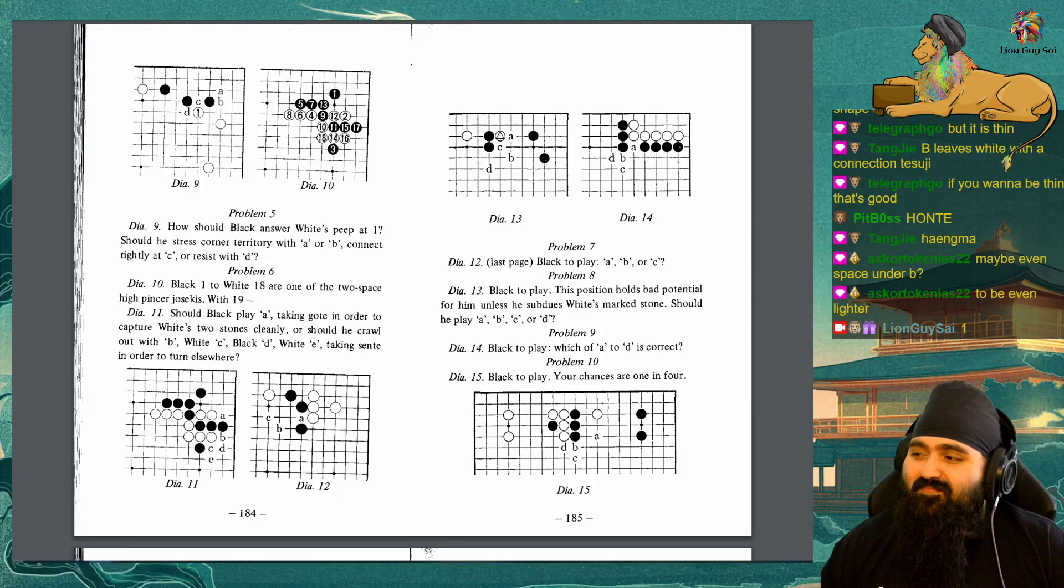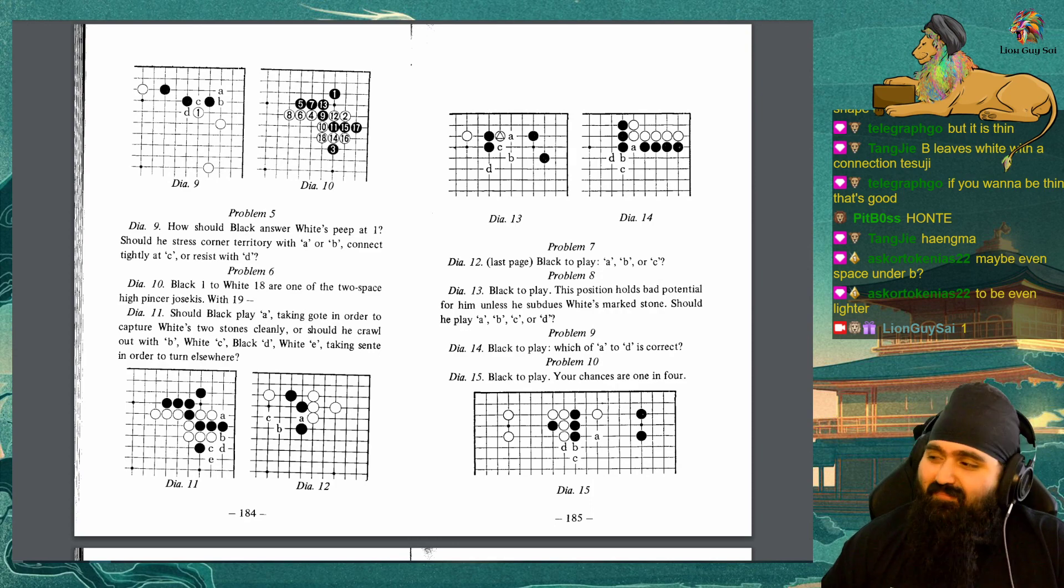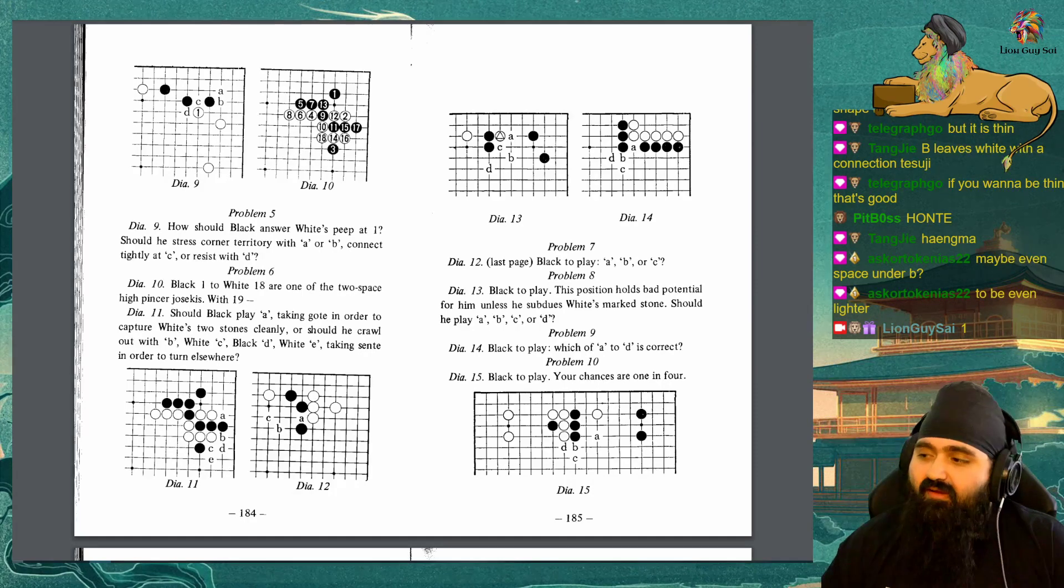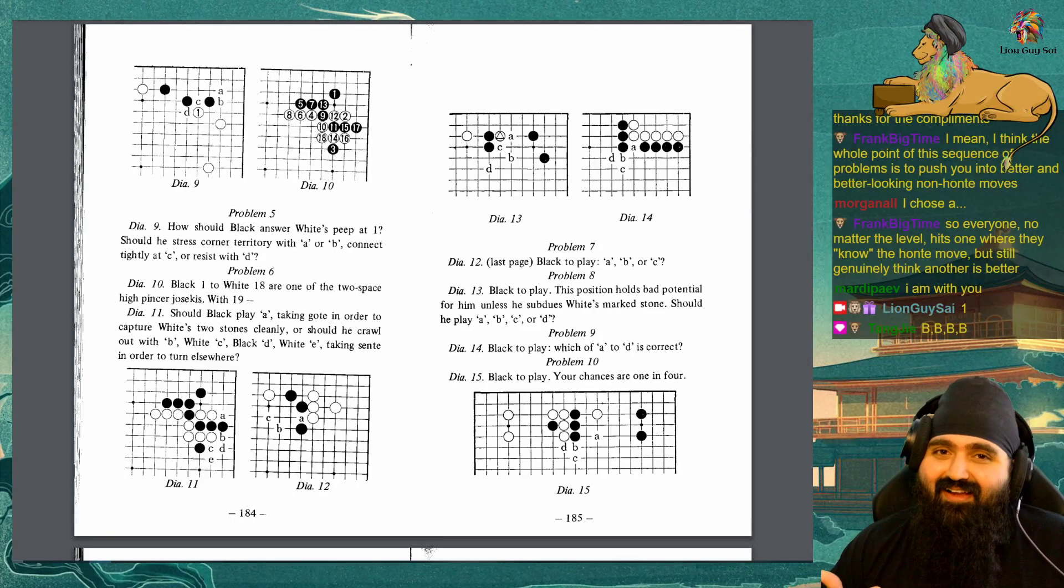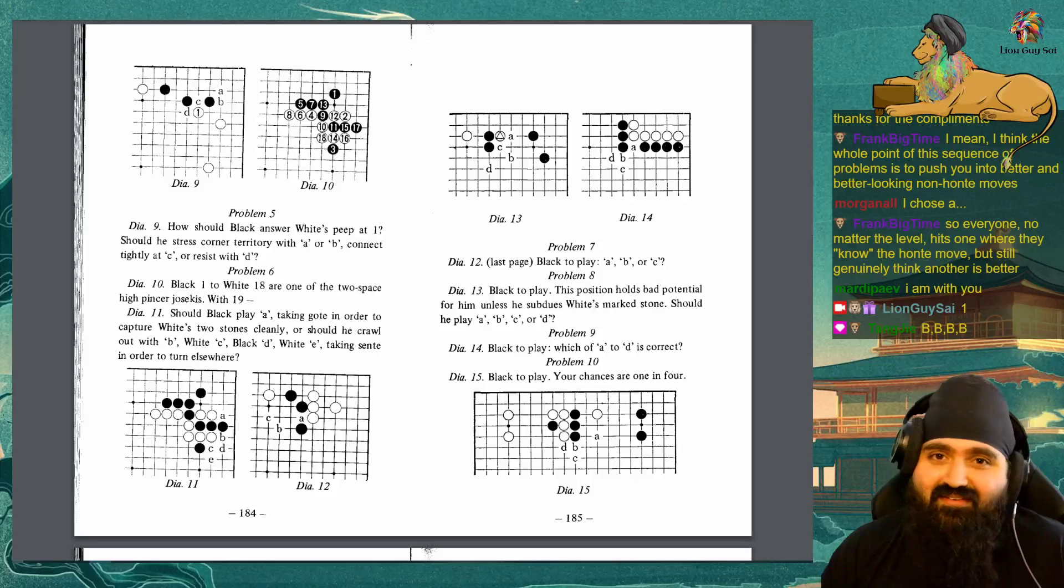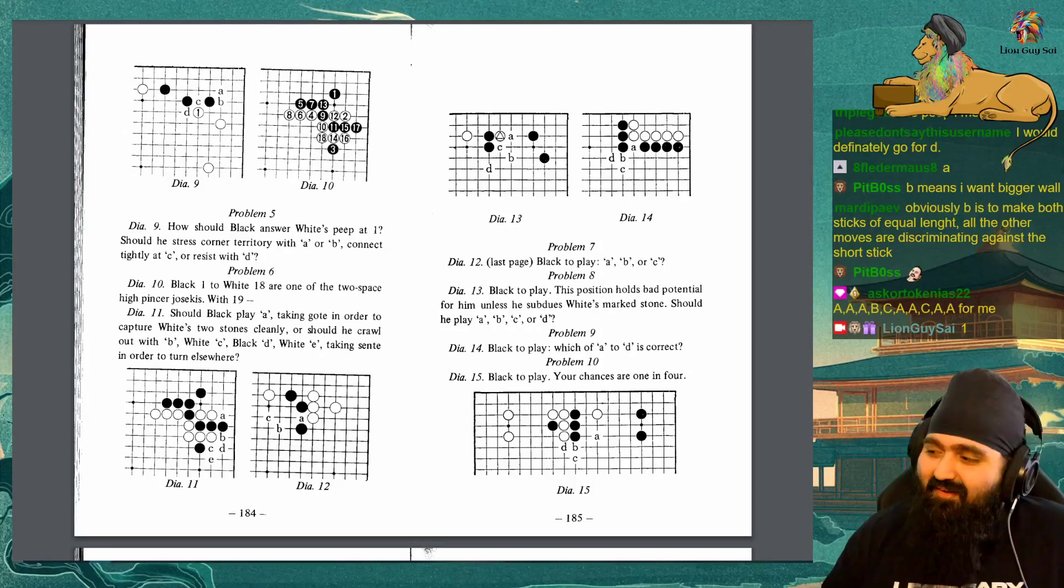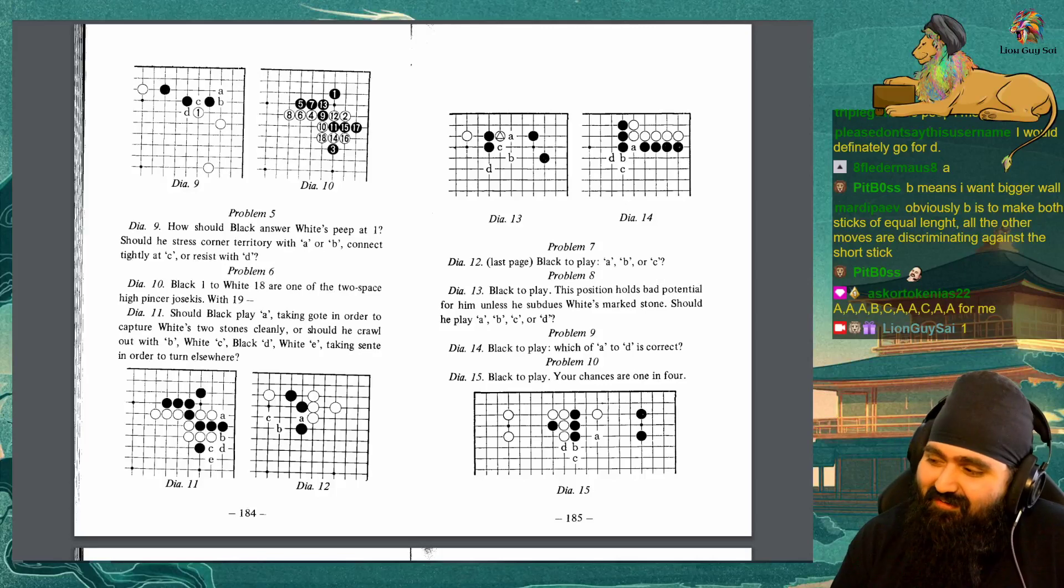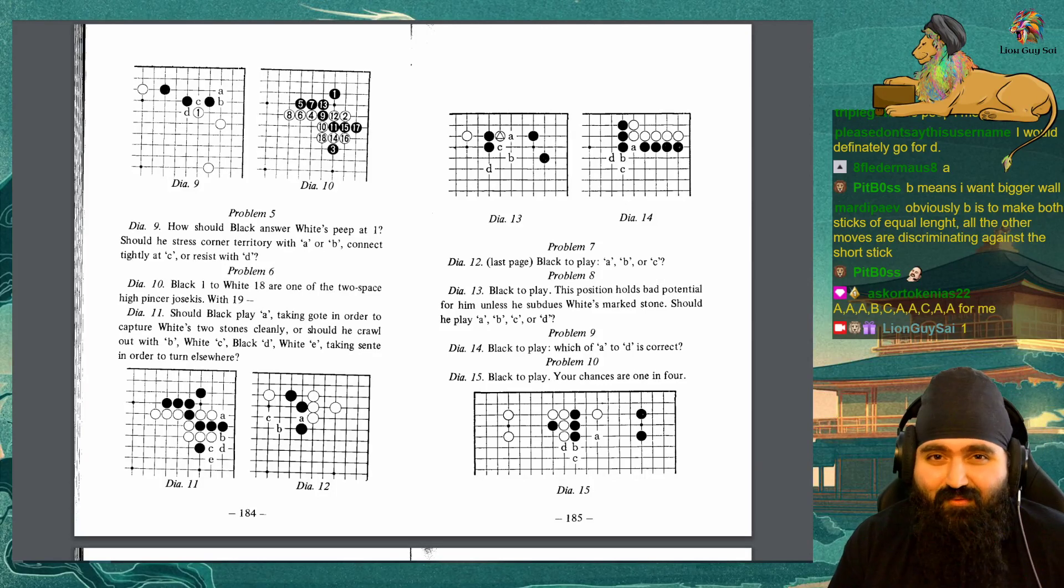Problem 7. Diagram 12. Black to play. A, B, or C. Problem 8. Diagram 13. Black to play. This position holds bad potential for him unless he subdues White Mark's stone. Should he play at A, B, C, or D? Problem 9. Diagram 14. Black to play. Which of A to D is correct? Problem 10. Diagram 15. Black to play. Your chances are 1 in 4.